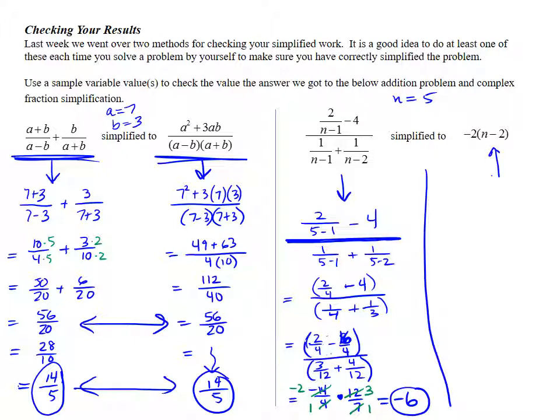On the other side, this should be a little bit easier. Plugging a 5 into this simplified expression. 5 minus 3, minus 2 rather, becomes a 3. So I get negative 2 times 3, which is negative 6. Much easier on that side. That's part of why we simplify is we want things to be that simple.